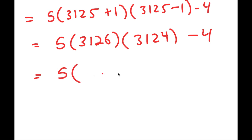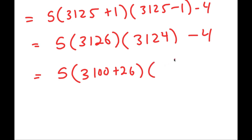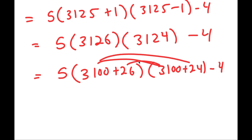So what I'm going to do is rewrite 3126 as 3100 plus 26. This way we have a simpler number because it ends in a 0. And same with 3124 — I'm going to rewrite it as 3100 plus 24. So this way to multiply these I can just distribute, and there's no real challenge in multiplying any of these numbers because the larger numbers end with 0.